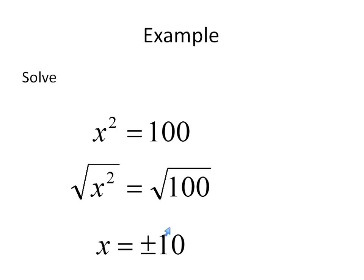That leaves us with x on the left. And on the right, the square root of 100 will be plus or minus 10. In other words, 10 times 10 is 100. Negative 10 times negative 10 gives you also 100.